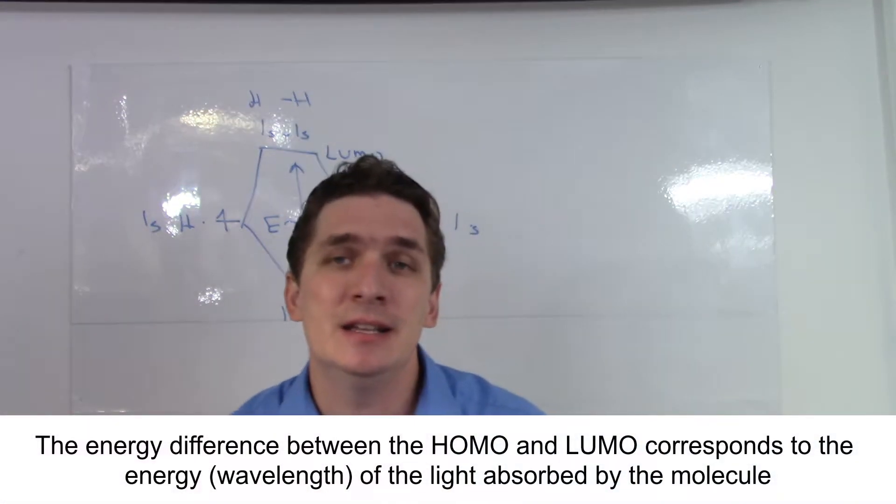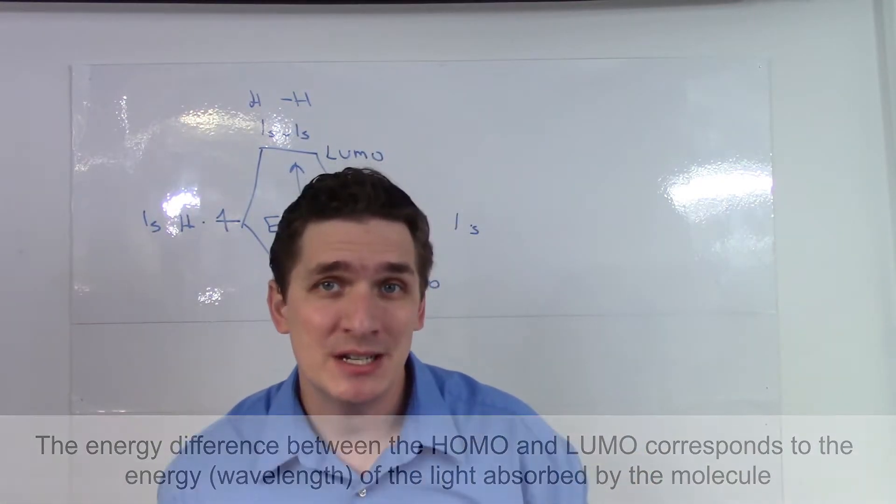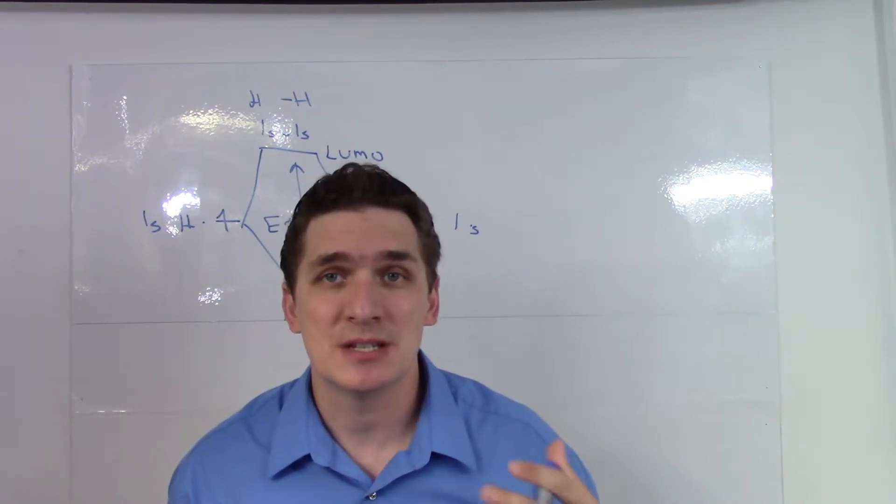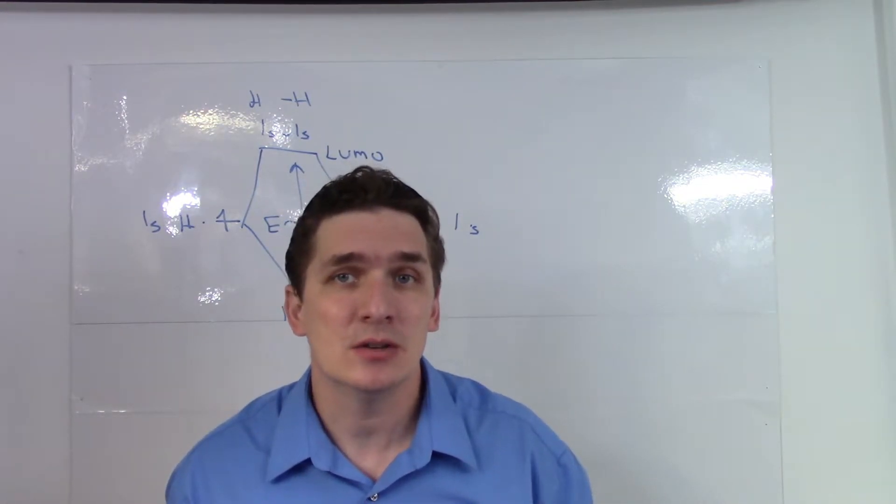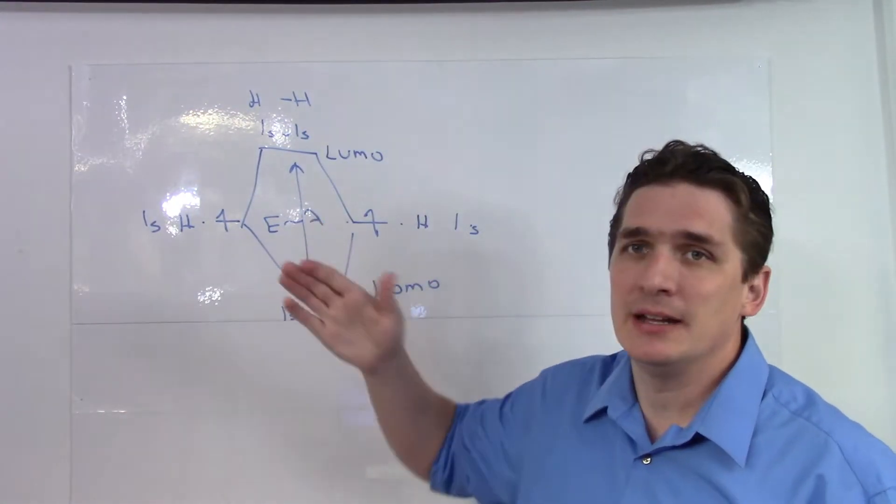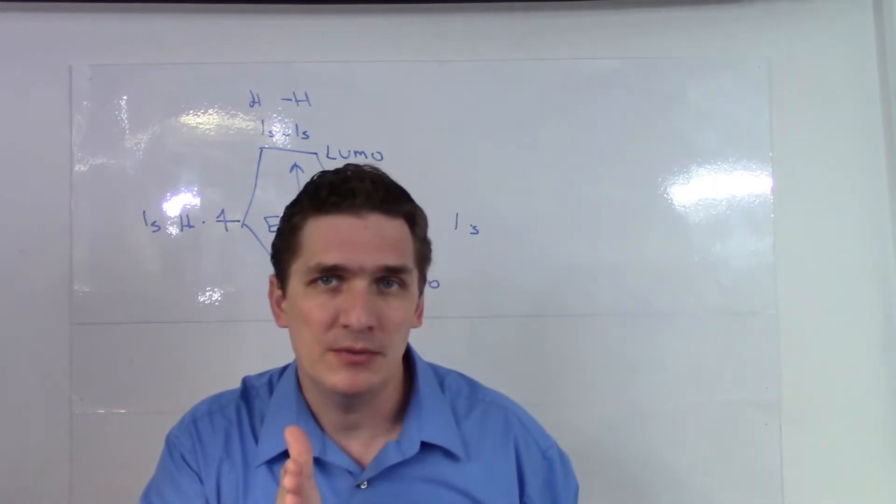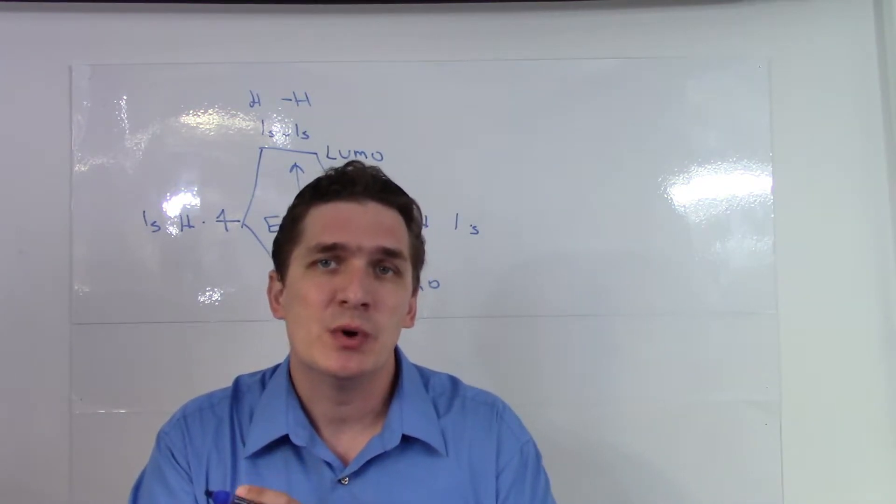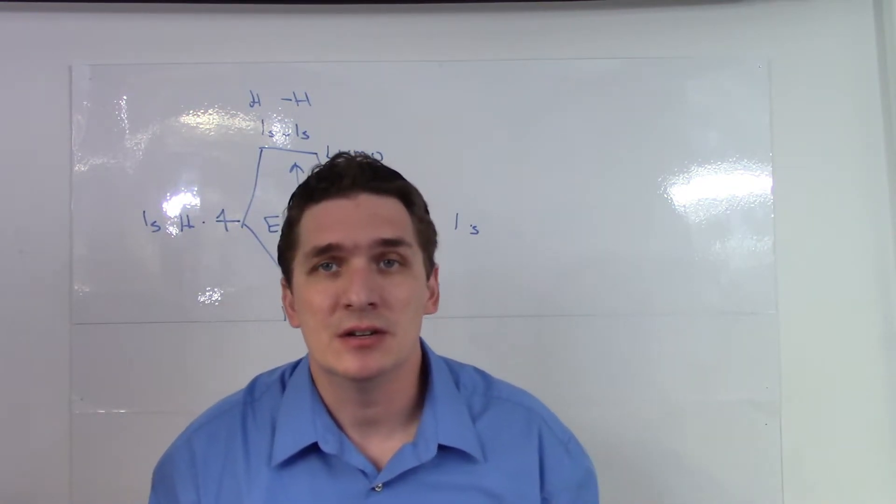Now again, it's not an exact number. If it was an exact number, we'd know the energy of electrons precisely, and Heisenberg uncertainty says we can't know that. So we're going to see this hydrogen molecule absorb light on average in that wavelength, but above and below as well to correspond to the uncertainty of the energy of the electrons.